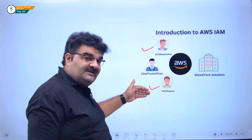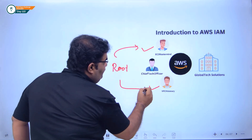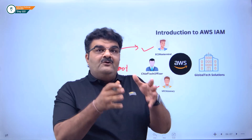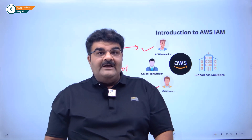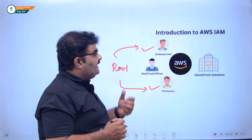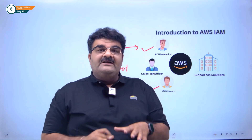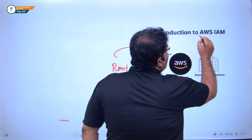Now the question is: how are EC2 Mastermind and VPC Visionary going to log into the AWS account? Is it a good idea for Mr. Chief Tech Officer, who is the root user, to share his account with these two people? If you are doing this, then you are not following AWS security best practices. Let's say one day you log into your AWS account and find that two EC2 instances are actually terminated. Now everybody is using the same root user account — how can you find out who did it? It is very difficult, and sharing an account with each other is not a good idea.